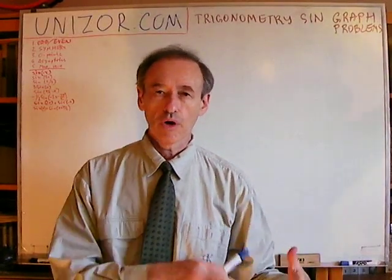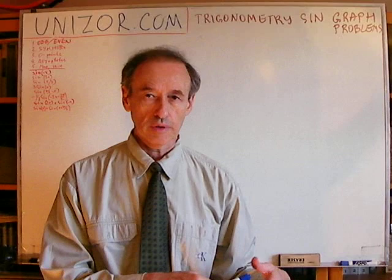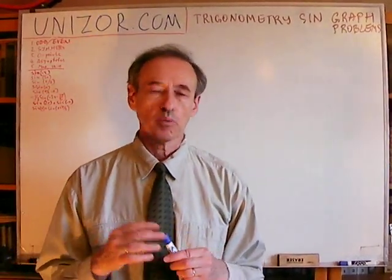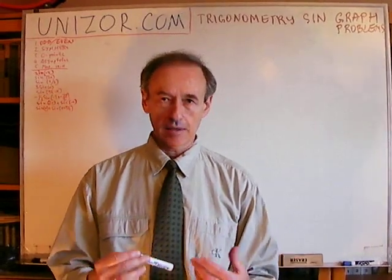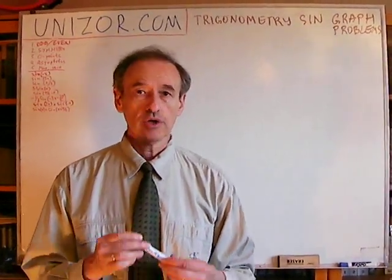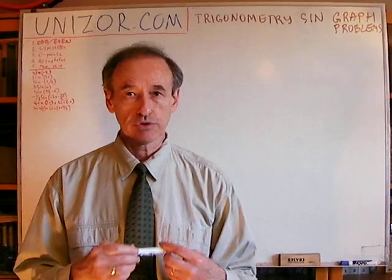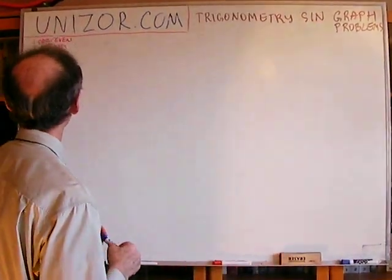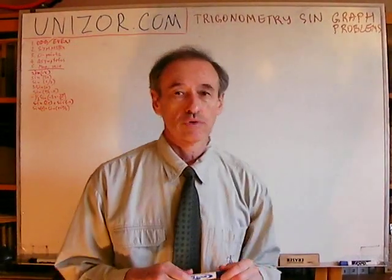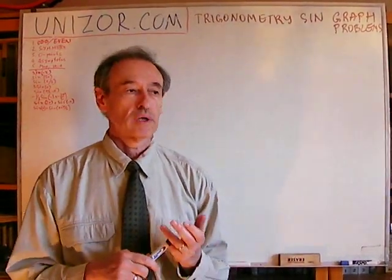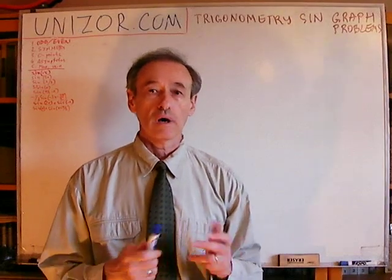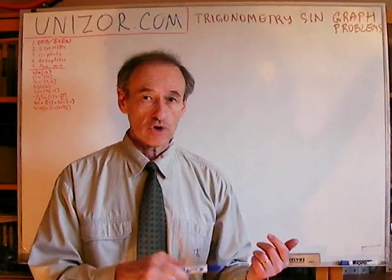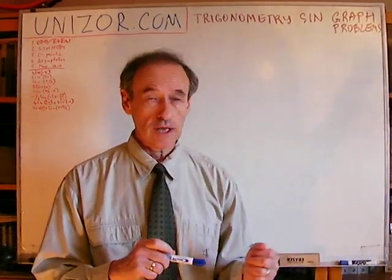First of all, before we go into concrete problems, let me summarize what you really have to understand about the function before you attempt to graph it. I have a few points to address one after another. First of all, trigonometric functions are either odd or even. Odd means they change the sign if the argument changes sign — like sine, for instance, or tangent.